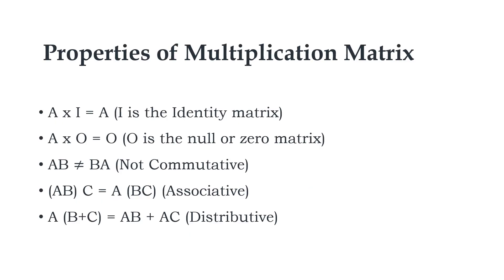Properties of matrix multiplication: When matrix A is multiplied with the identity matrix, the resultant matrix will be A. When we multiply matrix A with a null or zero matrix, the resultant matrix will be a null matrix. Matrix multiplication does not support commutative law, but it supports associative and distributive law.